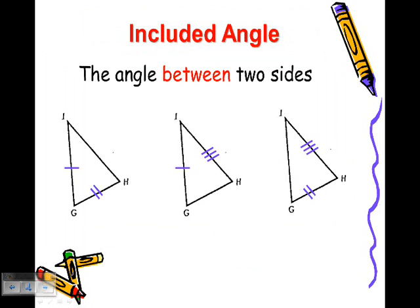Let's talk a little more about what that word included angle means. If I have triangle IGH here, the included angle will be the one between the two sides. The two sides I know are congruent are IG and GH. The angle between those is angle G, so that's the included angle.